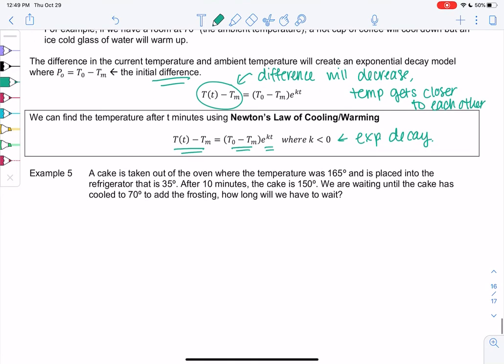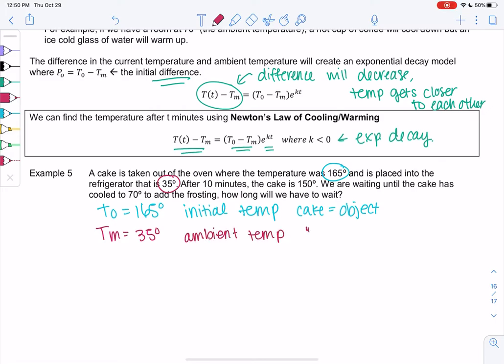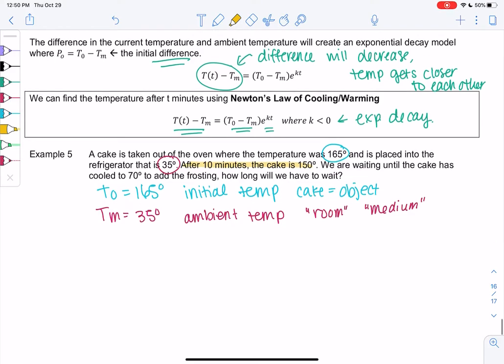So let's say we're baking a cake in example 5. We take the cake out of the oven, where the temperature was 165. So that'll be my T0, the temperature that the cake started at. Initial temp of cake, where cake is my object. And we place it in the refrigerator that's 35 degrees. So that's my ambient temperature. This is my room or my medium where we place the cake. And then we find out that after 10 minutes, the cake is 150 degrees. So that'll be important information in a second. And then we need to wait to place the frosting on. So we're waiting until the cake hits 70 degrees to add the frosting. So how long do we have to wait?